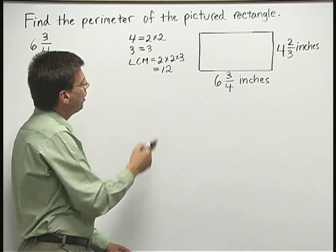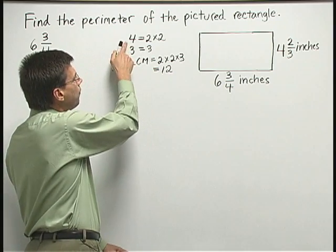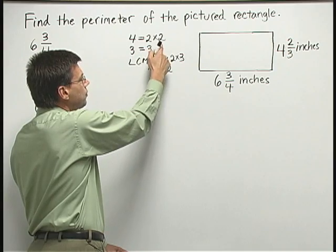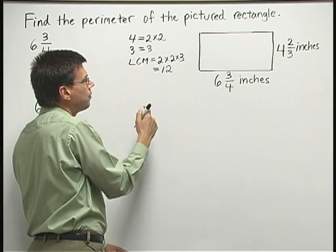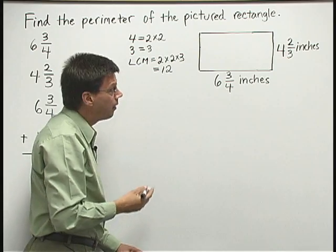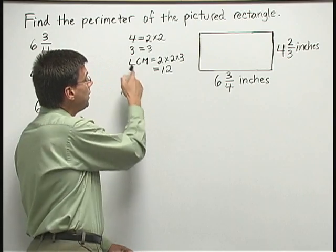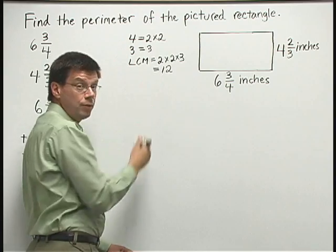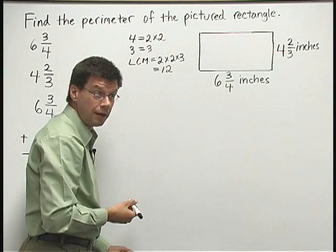Here, because four has two factors of two, three has one factor of three, they don't share any number as a factor. Because they don't share any factors, we can multiply four times three together to get that LCM.